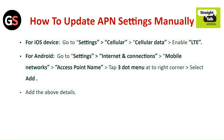How to update APN settings manually. For iOS devices, go to Settings, then Cellular, then Cellular Data, and enable LTE. For Android, go to Settings, then Internet and Connections, and select Mobile Network. Click on Access Point Name, tap the three-dot menu at the top right corner, select Add, and then add the details above.